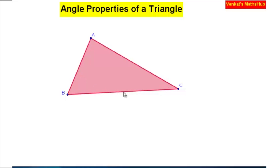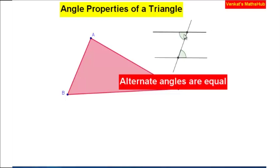I am going to talk about some of the properties of the triangle. Before that, let's recall a concept you have already learned. If two lines are parallel and there is a transversal intersecting at two points, these two angles are called alternate angles. When the lines are parallel, alternate angles are equal — only when the lines are parallel.